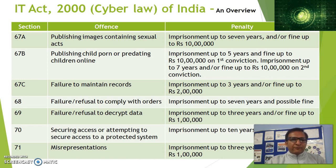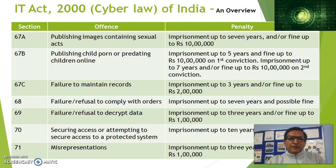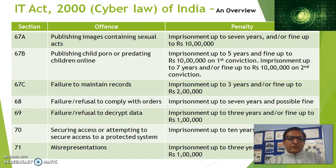Here we can see an overview of a few sections and the offences mentioned under those sections and the penalties involved. For example, section 67A — publishing images containing obscene content — has a penalty of imprisonment up to 7 years and a fine up to 10 lakh rupees. One can read all sections to know more about it.